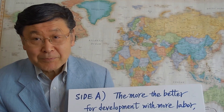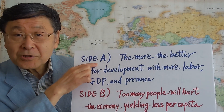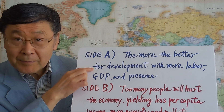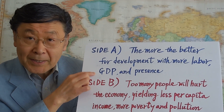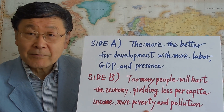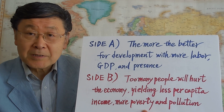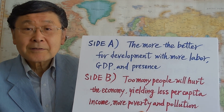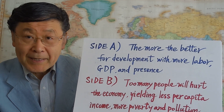Here is the debatable point: which is better, more population or less population? Side A argues that more population is better for economic development, because it means more labour force, greater total GDP, and global presence, as we see in the case of BRICS. The increase in population in some emerging economies may offset the decrease in advanced economies in terms of total population.